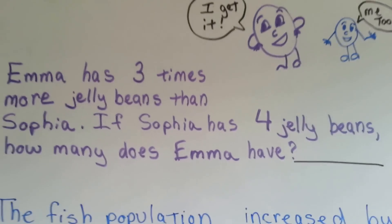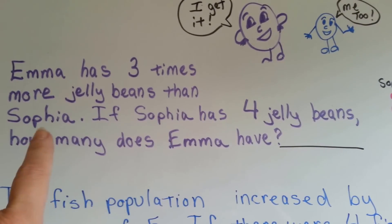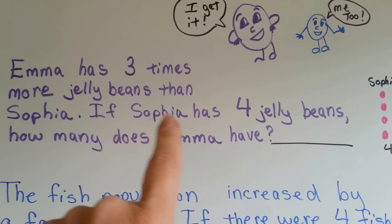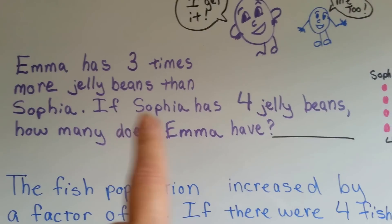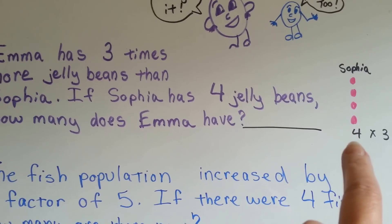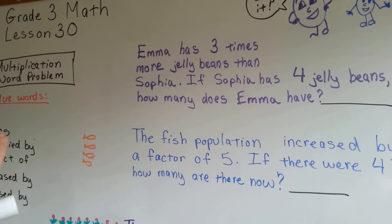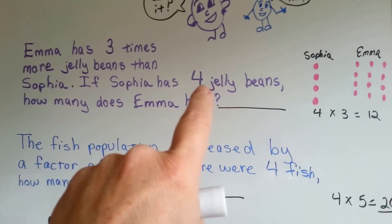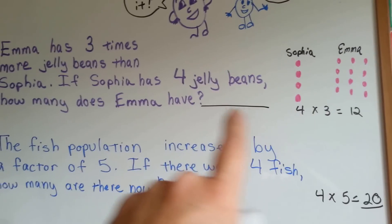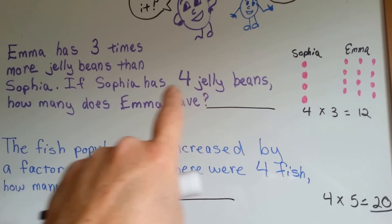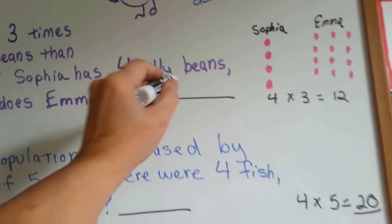Let's look at one. Emma has three times more jelly beans than Sophia. If Sophia has four jelly beans, how many does Emma have? See the word times? That's a clue word. So we're going to do four times three, or three times four. If she has four jelly beans and Emma has three times more, three times four is twelve.